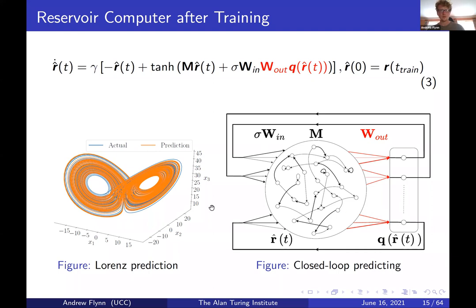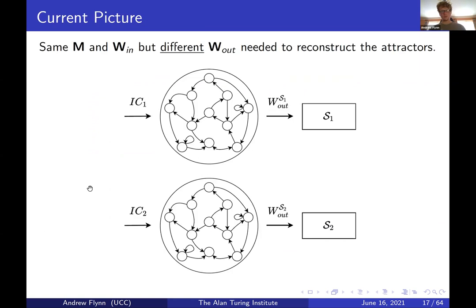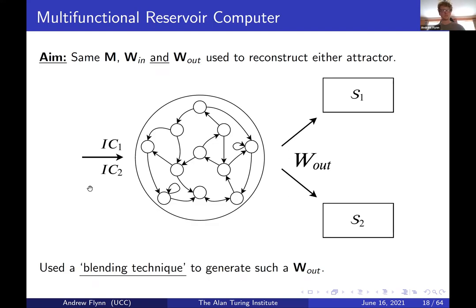For instance, if you train the reservoir using data from the Lorenz attractor, your prediction continues the evolution with W_out times Q replacing the former input. The reservoir does a good job of imitating the dynamics of a desired attractor. What about two different attractors? In the context of multifunctionality, training on one attractor and then on another gives the same M and W_in matrix but different W_out matrices to reconstruct each individually. What we would like is the same M, W_in, and W_out — a single network that can reconstruct either attractor depending on how the reservoir is initialized.